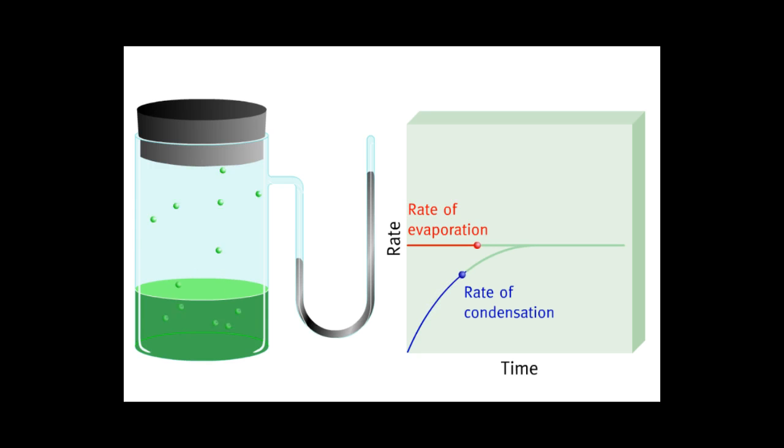Eventually the number of molecules leaving the liquid is equal to the number of molecules returning to the liquid. A state of dynamic equilibrium is reached as the rates of evaporation and condensation become equal. The difference in mercury levels represented by H is the equilibrium vapor pressure of the liquid at the given temperature.